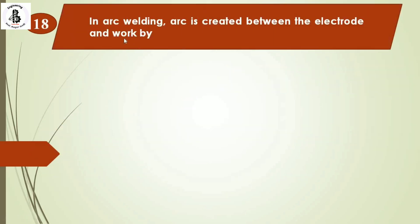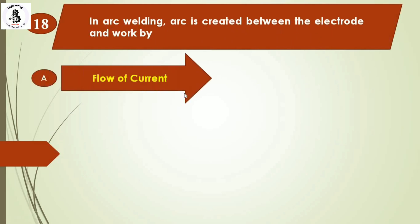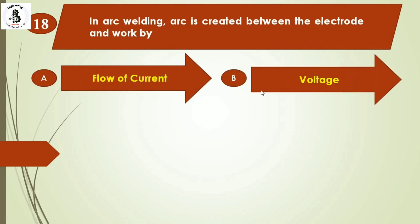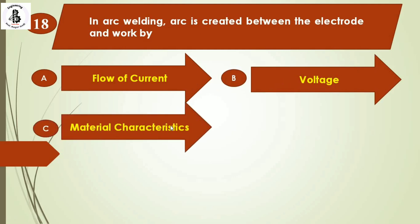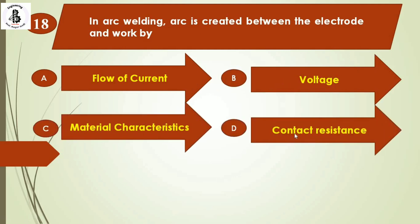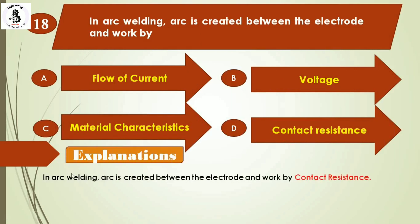The next question: in arc welding, the arc is created between electrode and workpiece by — Option A: flow of current, Option B: voltage, Option C: material characteristics, Option D: contact resistance. In arc welding, the arc is created between the electrode and workpiece by contact resistance. The right answer is Option D.